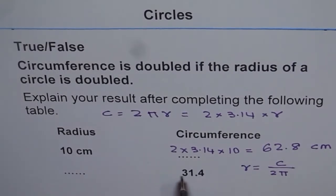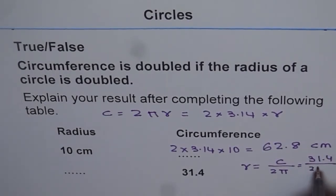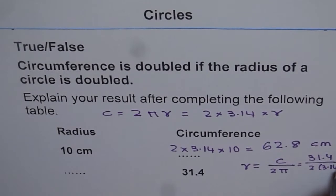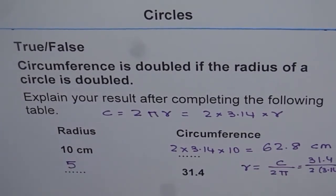Here circumference is 31.4. So, we will do 31.4. We will divide it by 2 and then by 3.14. And let us see what do we get. So, 31.4 divided by 2, and then we will divide this by 3.14. We get a value of 5.